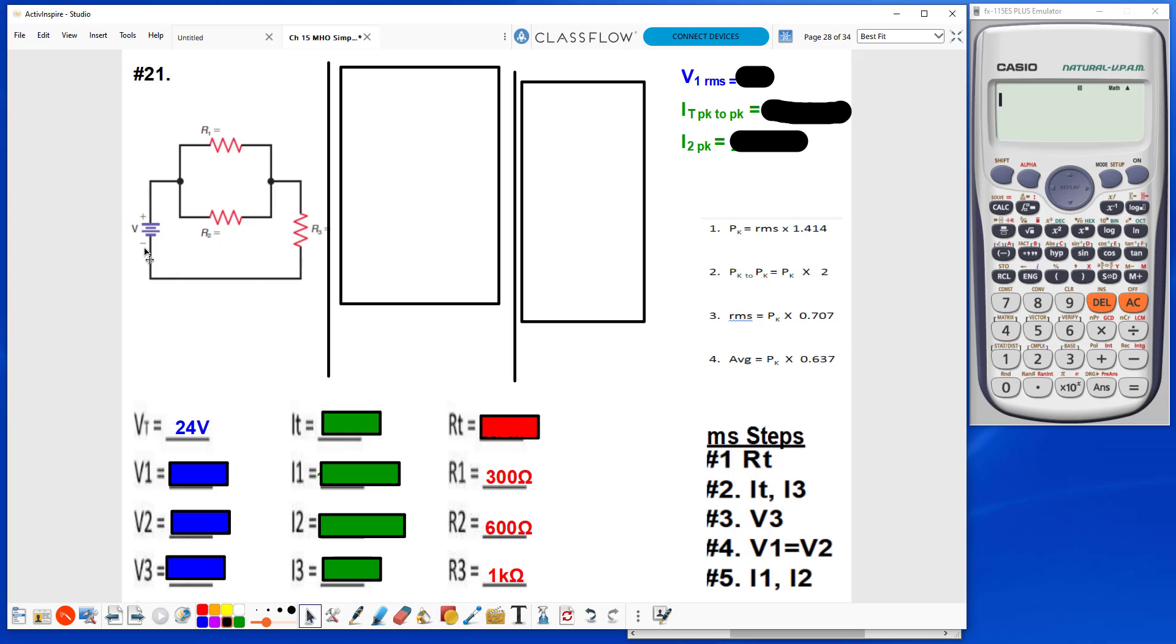So my first goal is to find Rt. I take a look at the circuit here, and I can determine which resistors are in series and which ones are in parallel by the current flow. So through R3 here, there is only one pathway for current to flow through. That tells me that R3 is in series with the voltage source.